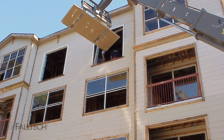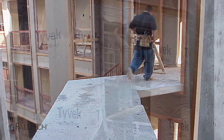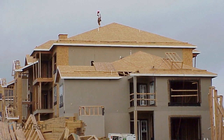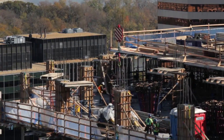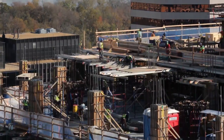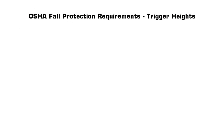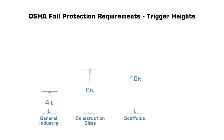In order to eliminate fall hazards, first you have to identify them. The types of hazards will vary from one workplace to another, but it is important for each employer to survey the workplace and fall hazards to create a fall protection plan. Employers are required by OSHA to set up a workplace to prevent employees from falling from overhead platforms, elevated workstations, or into holes in floors and walls. OSHA also requires that fall protection be provided at elevations of 4 feet in general industry workplaces, 6 feet in construction, 10 feet for scaffolds, and 15 feet for steel erection.